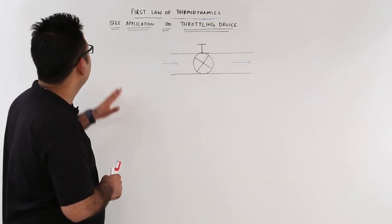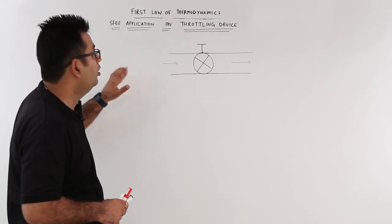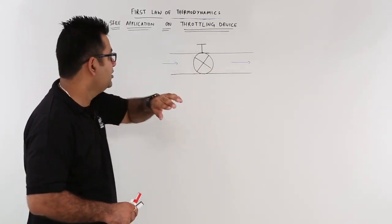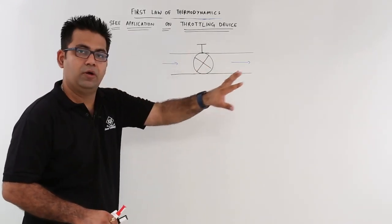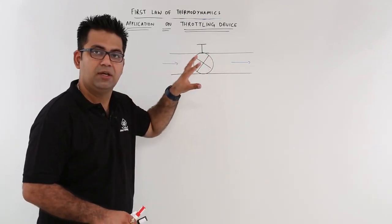Now let's talk about the application of SFE on a throttling device. So this is a throttling operation going on. You have a pipeline in which a fluid is flowing.